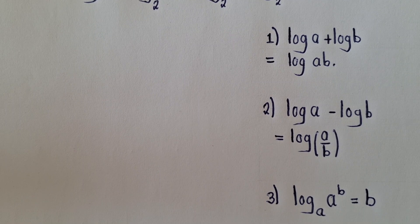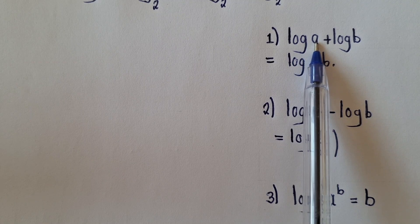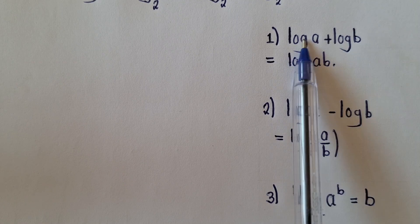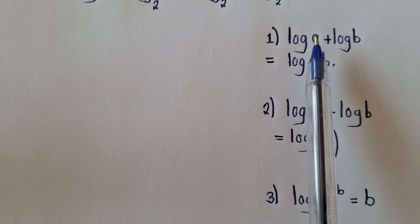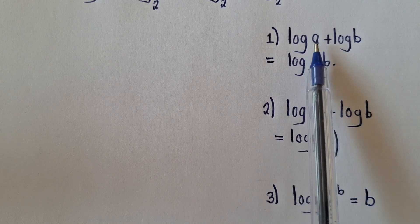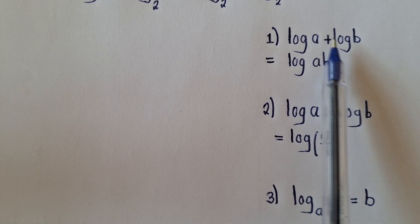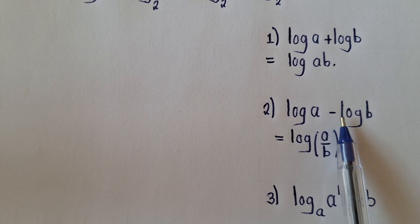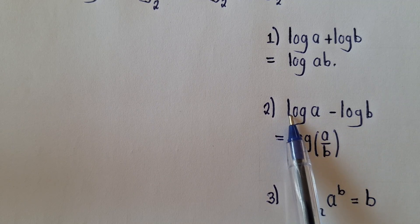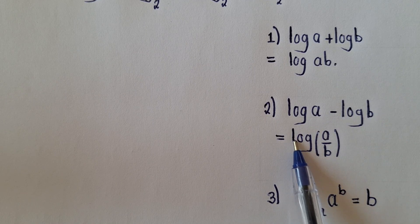To simplify this, we need these three properties. Property 1 says that when you have log of something plus log of something — log(a) plus log(b) — the plus sign changes to multiplication, so you write log(a × b). For subtraction, it changes to division.